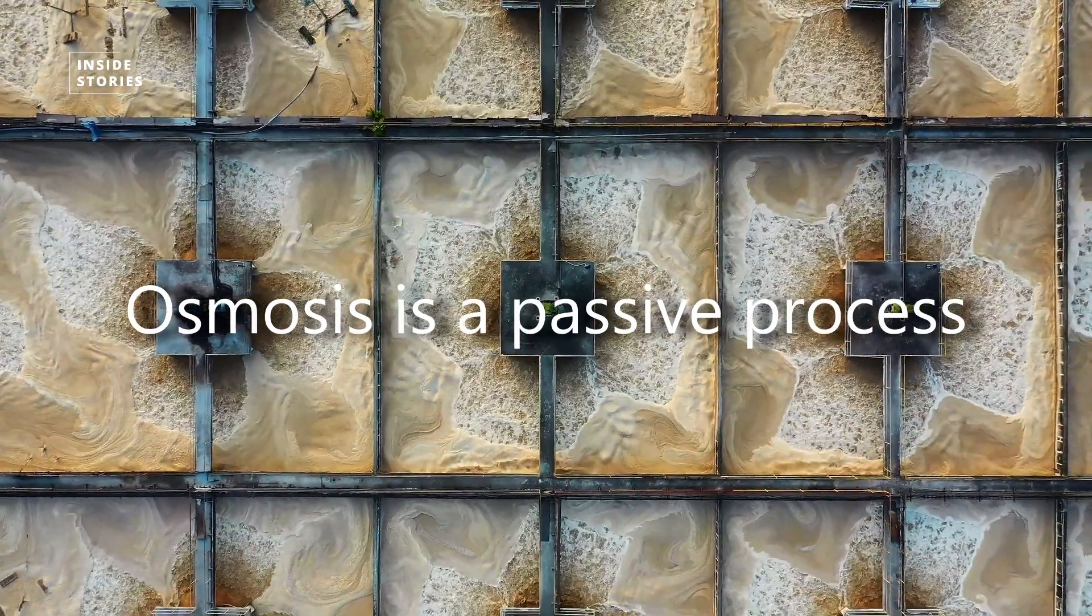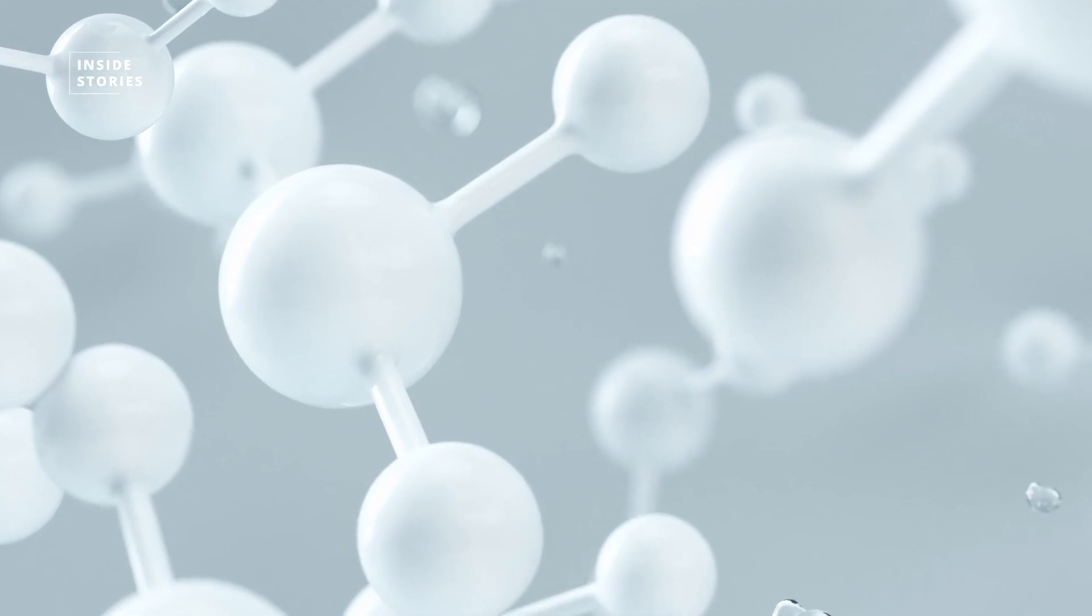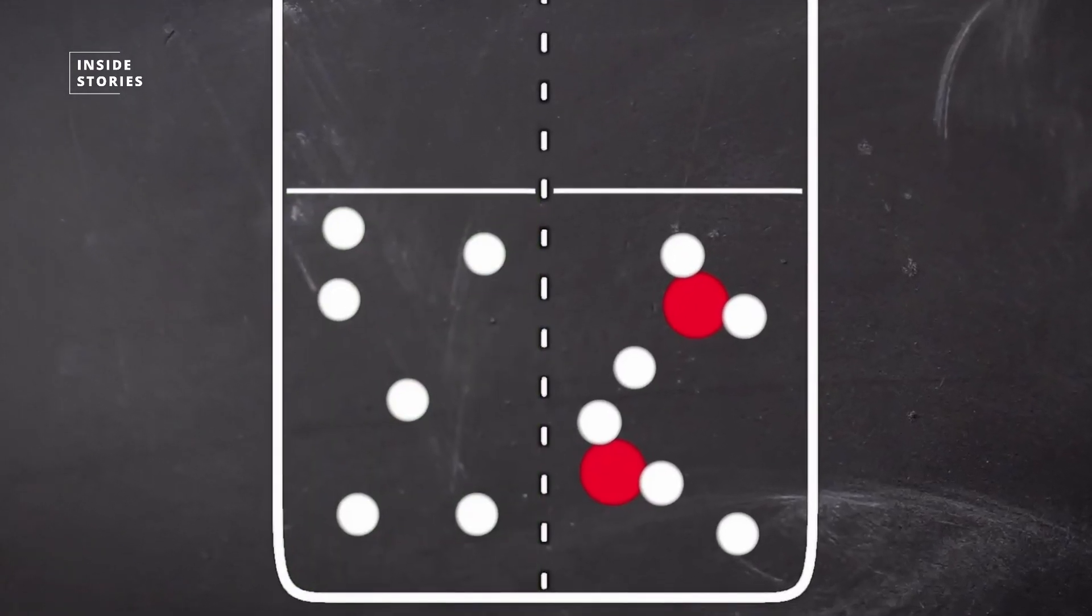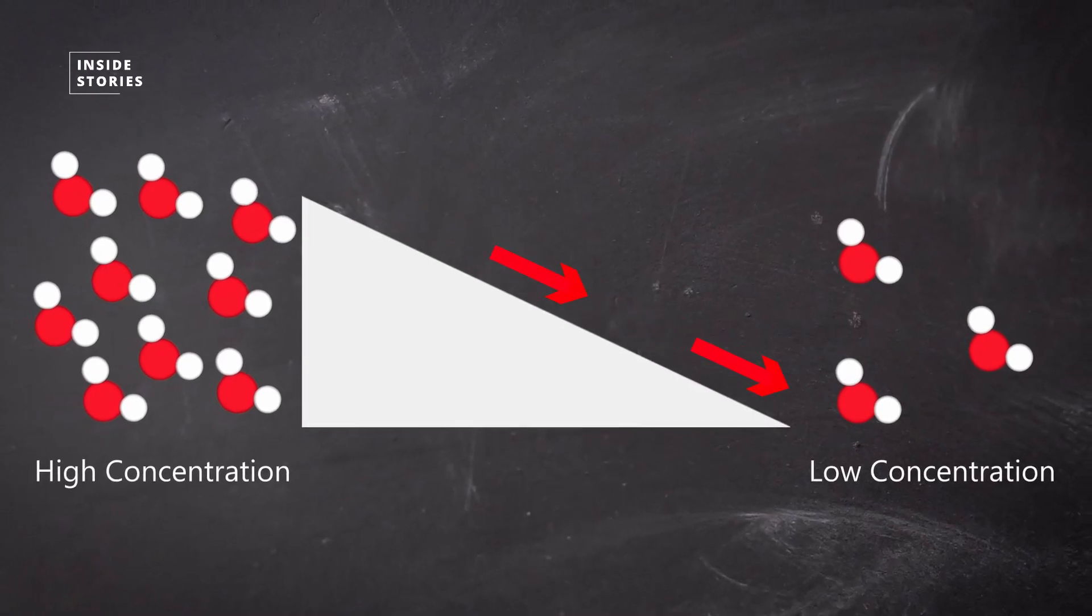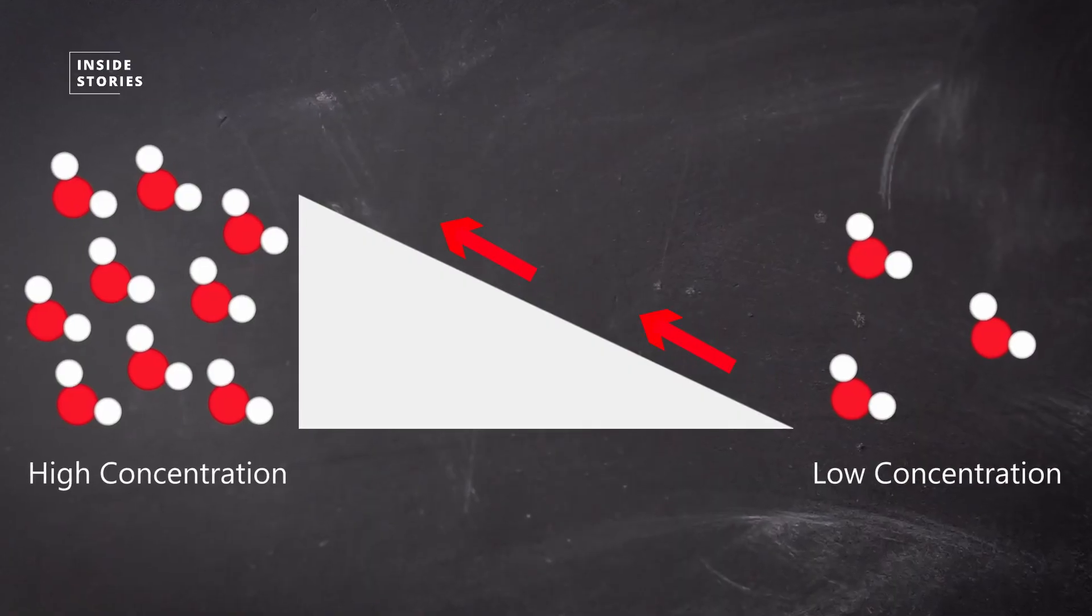Osmosis is a passive process, which means that no energy is required as we move molecules, in this case water molecules, from an area of high concentration to an area of low concentration, or down the concentration gradient. Energy would be required when we transport molecules against the concentration gradient.